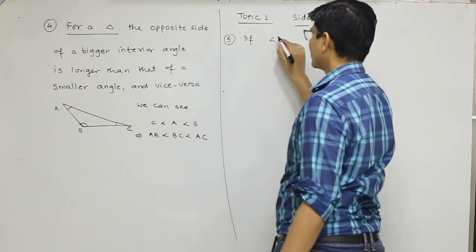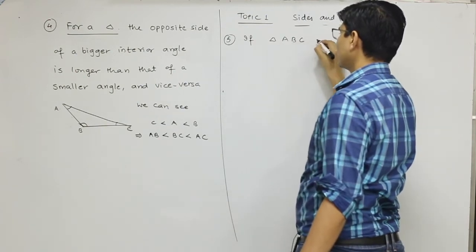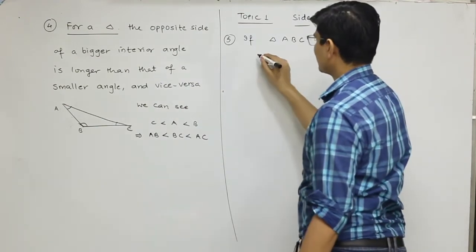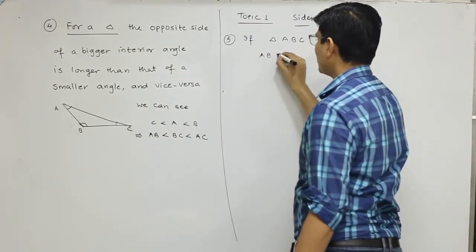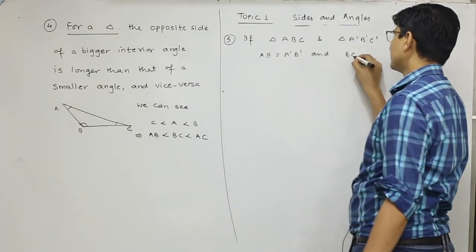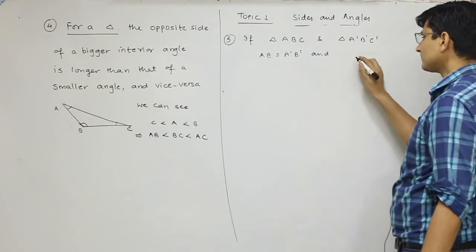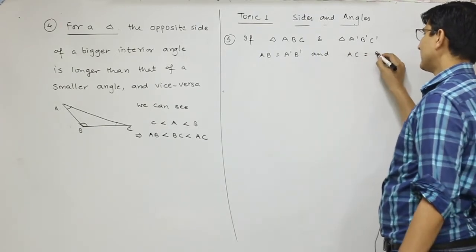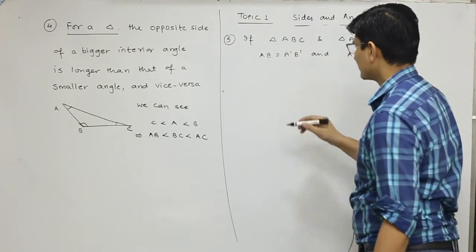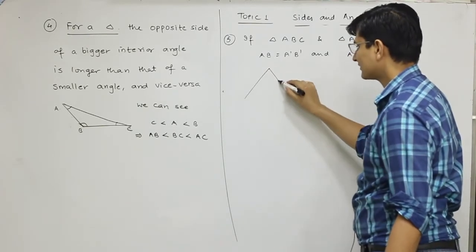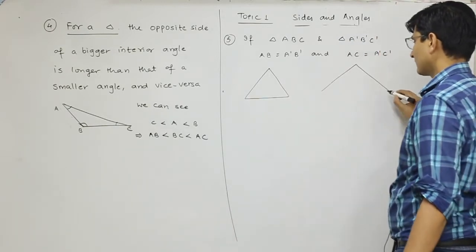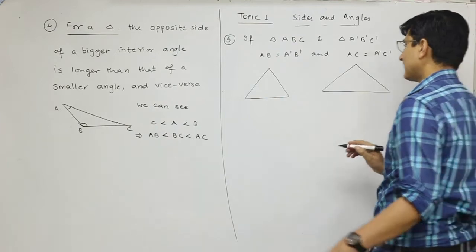You can write this another way too. If we have two triangles where AB equals A'B' and AC equals A'C', you have two triangles in which these two sides are equal.